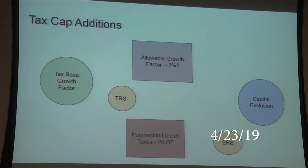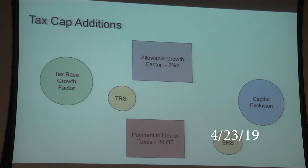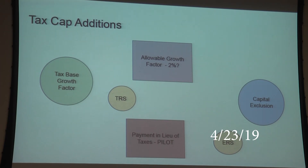Payment in lieu of taxes — also called PILOTs — are an add-and-subtract item. These are arrangements made with businesses to come into the area; they pay a reduced amount over a certain number of years and then go onto the tax rolls. TRS and ERS, our two pensions, can also allow us to add back more to the cap if they go up more than 2%.